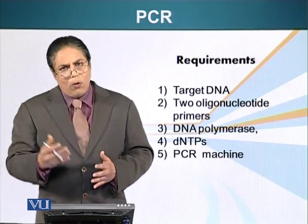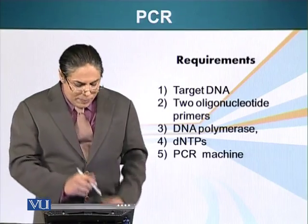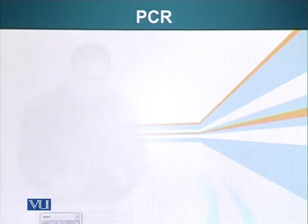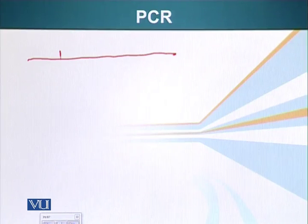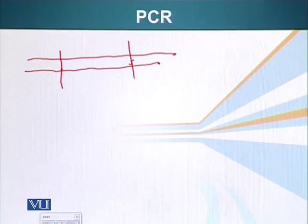I am going to draw this whole process first on the screen and then we will look at a shorter version of it and then we will also look at an animation. So let me draw it on the full screen. So basically what we have is a large piece, a large segment of DNA, and we are interested in amplifying or replicating a specific segment.